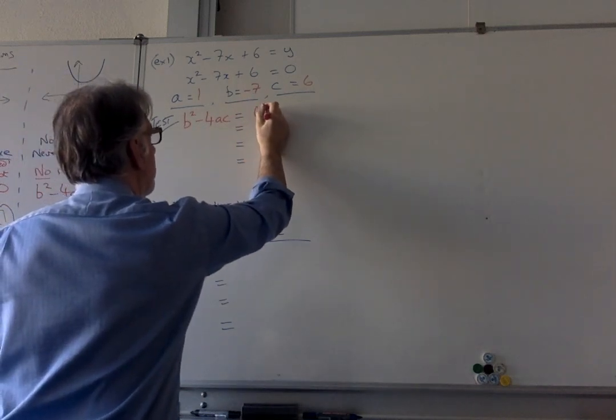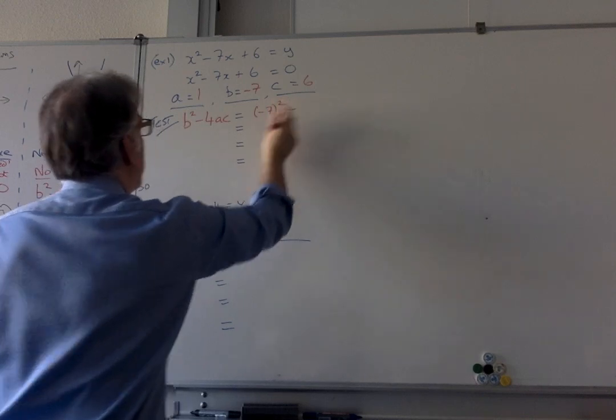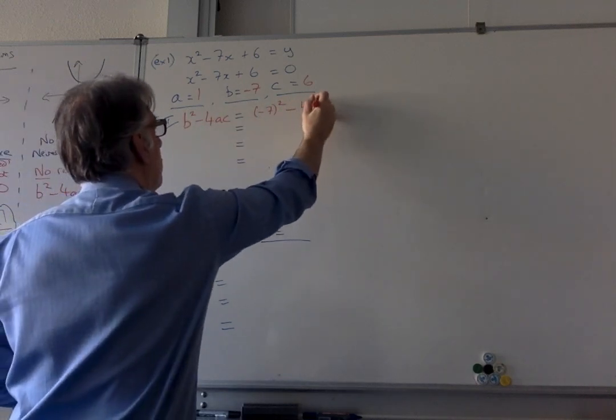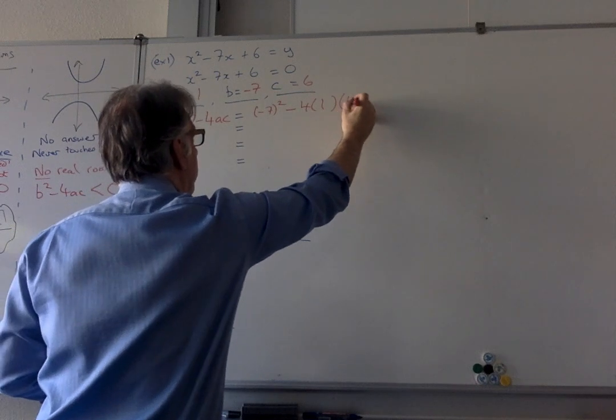b is minus 7, so we're going to take minus 7 and square it. Then we're going to minus, then we're going to times by 4, then we're going to times by the a, then we're going to times by the 6.